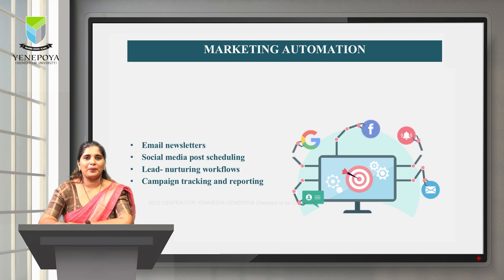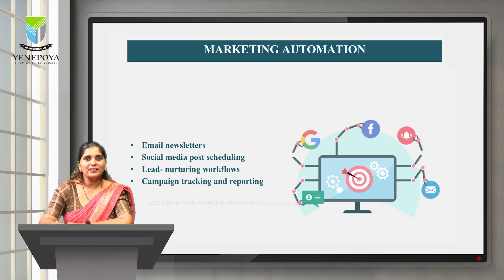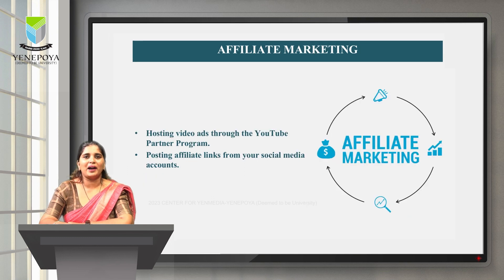Marketing campaigns can include many different people, emails, content, web pages, and phone calls. Marketing automation can help you sort everything you work on by the campaign it's serving, and then track the performance of that campaign based on the progress all of these components make over time.